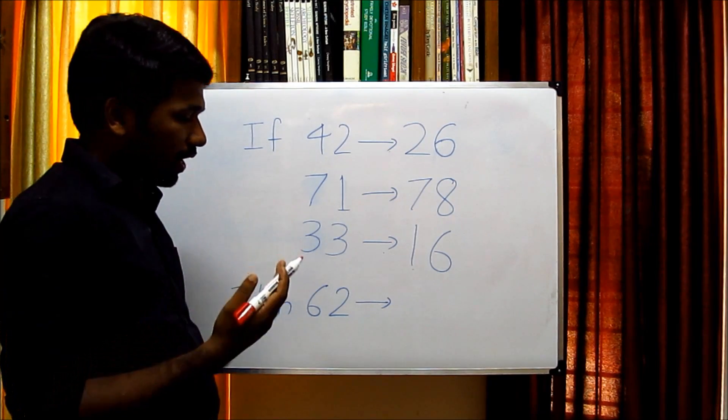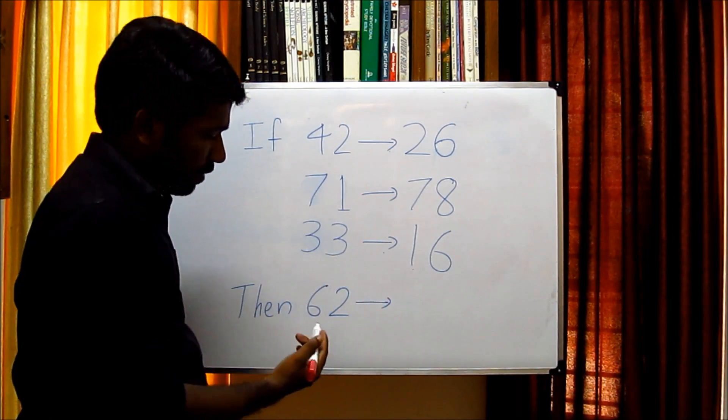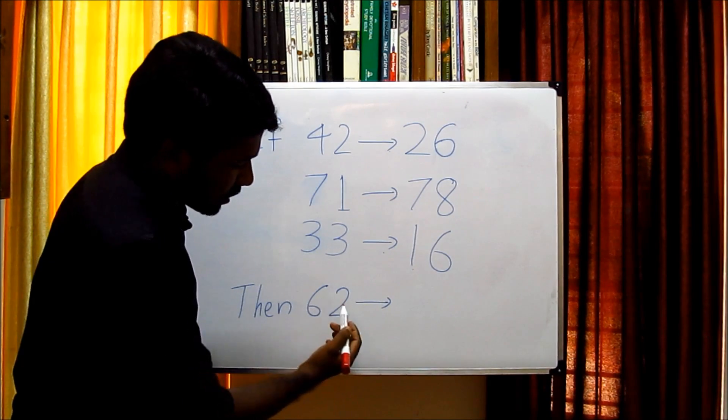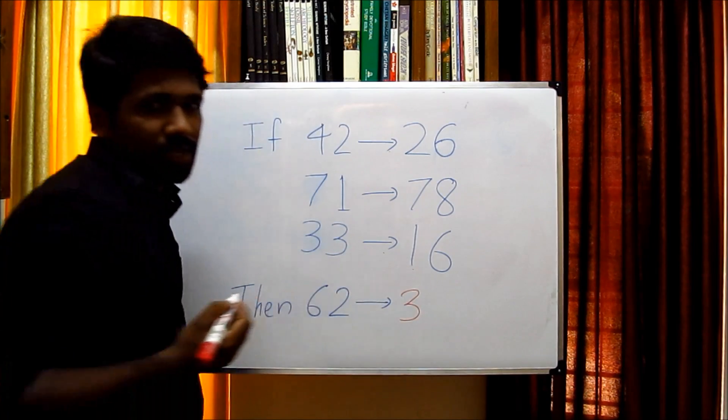In the same way, the first digit in our required number will be formed by dividing these two digits. That is, 6 by 2, 3 will be the first digit of the right side.